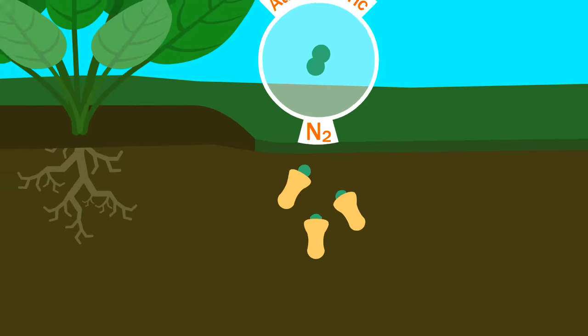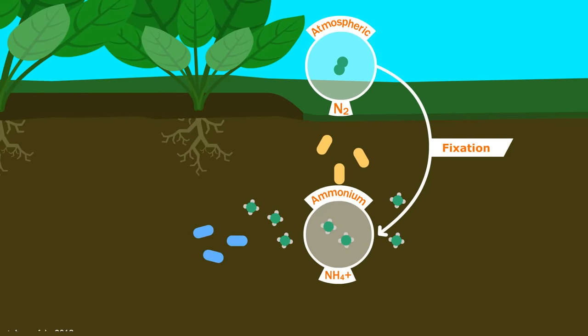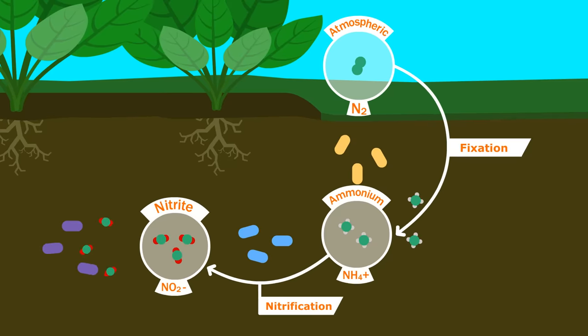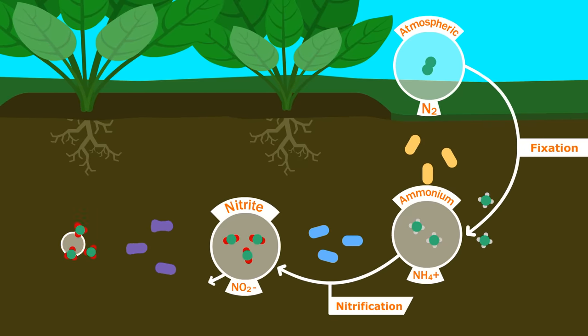Various species of bacteria eat atmospheric nitrogen and poop out ammonium. This gets eaten by other kinds of bacteria, which poop out nitrite, which gets eaten by yet another kind of bacteria, which poops out nitrate.